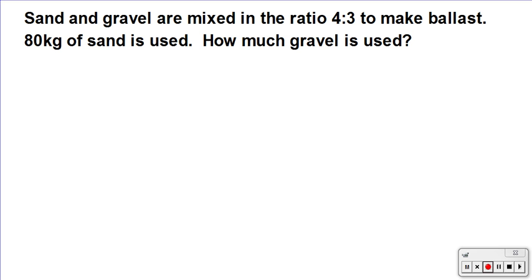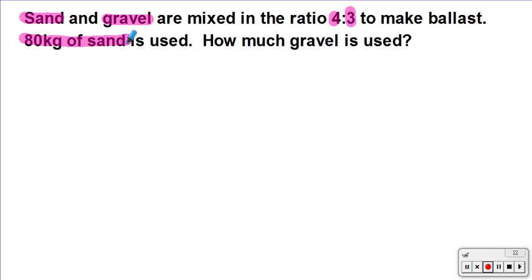Pause this video, read the next question, and see if you can do that one on your own, then replay the video to check your answer. To solve this question: we're talking about sand and rubble in the ratio of 4:3, and we know we've got 80 kg of sand being used. We want to know how much rubble is used.